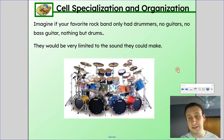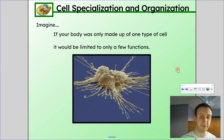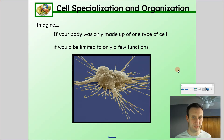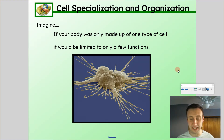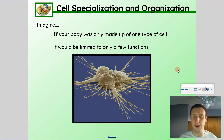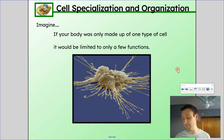It could still be good, but it's not going to be the same because everything would be identical in terms of what they can do. In the same way, in your body, if it was made up of only one type of cell throughout the whole body, it would be very limited in terms of the functions it could do. But instead, in our body, we have different types of cells, and those cells are specialized both in the types of organelles they have, the number of organelles, and their shape. They're specialized to their function.